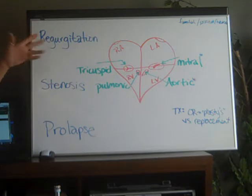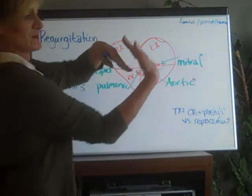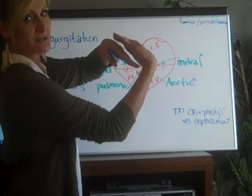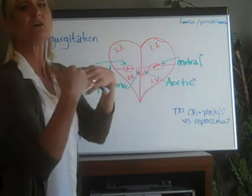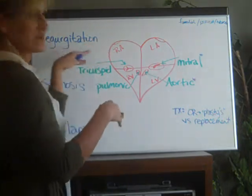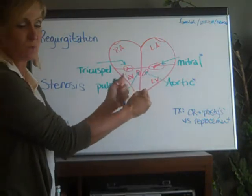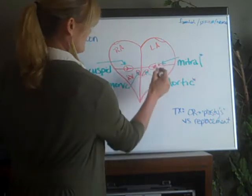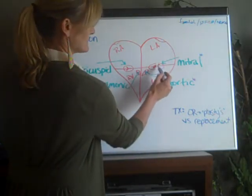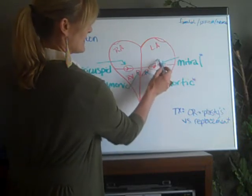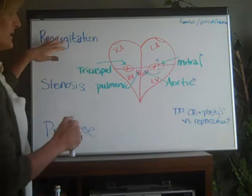The first and most common problem is regurgitation. What happens is when one of these valves is supposed to close up really tight, it just doesn't create a nice hard tight seal — it's like when your faucet's dripping after you turn it off. When those ventricles contract with a lot of force, you get some blood returning back the wrong way. Blood that's supposed to go out through the aortic valve during systole instead comes back up into the left atrium — that's called regurgitation.